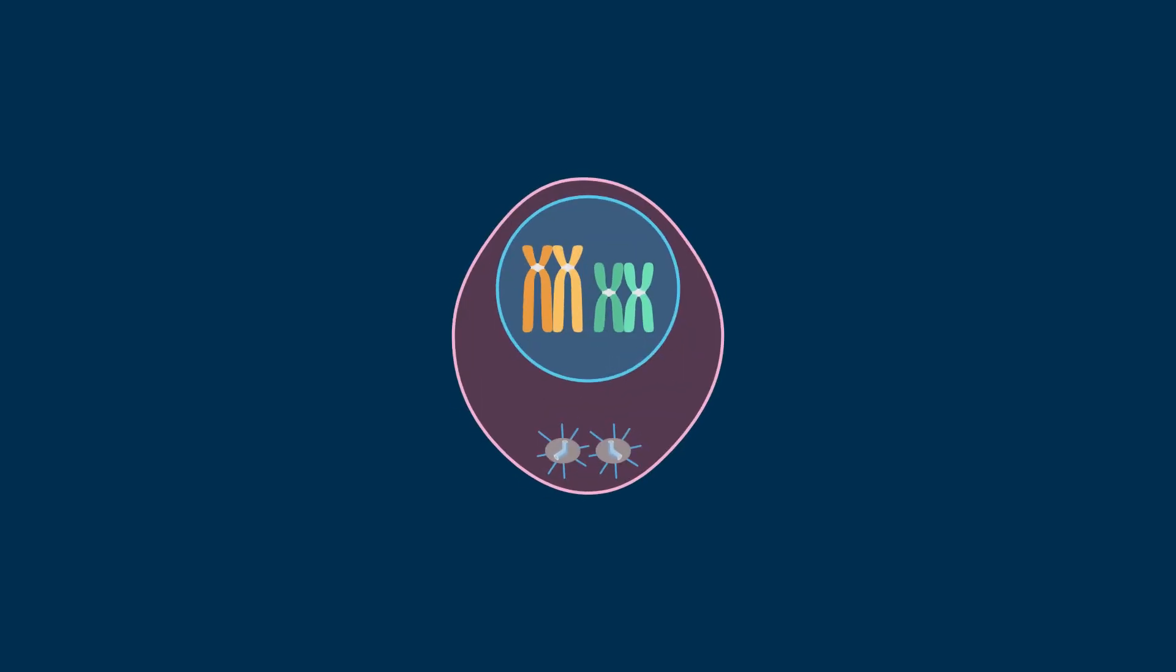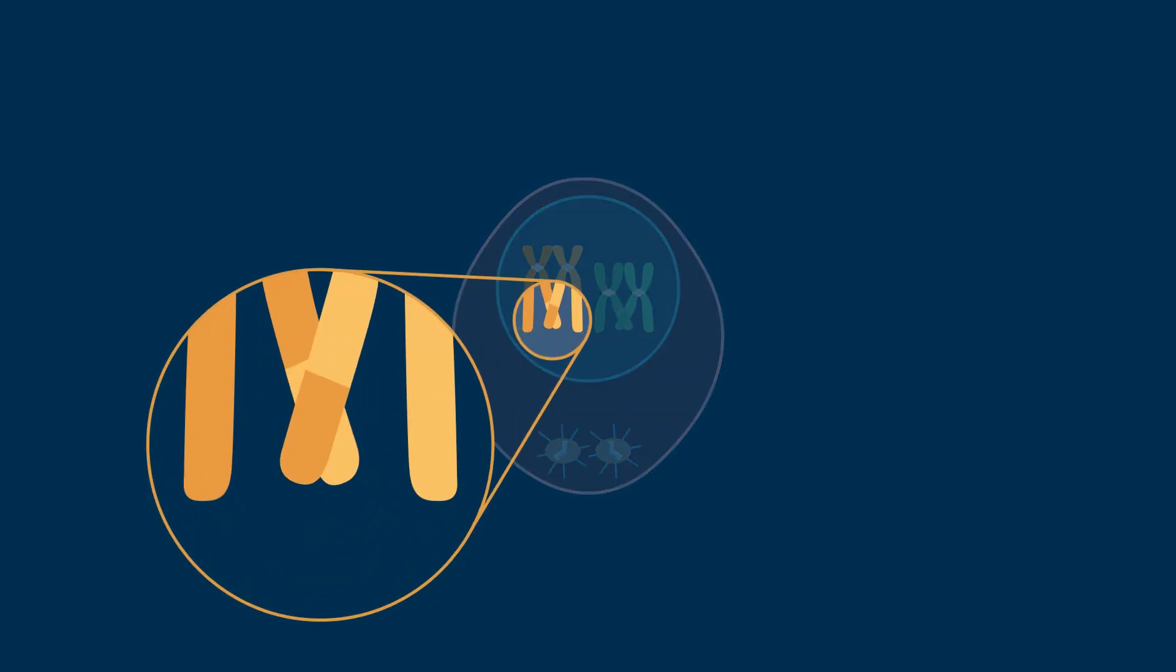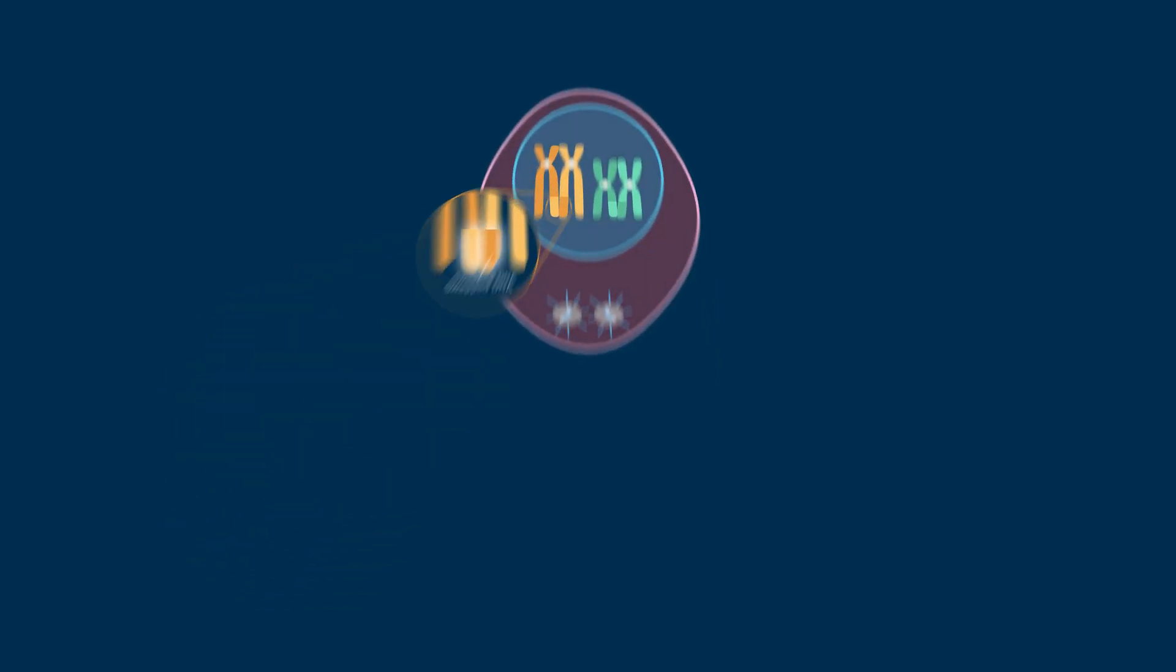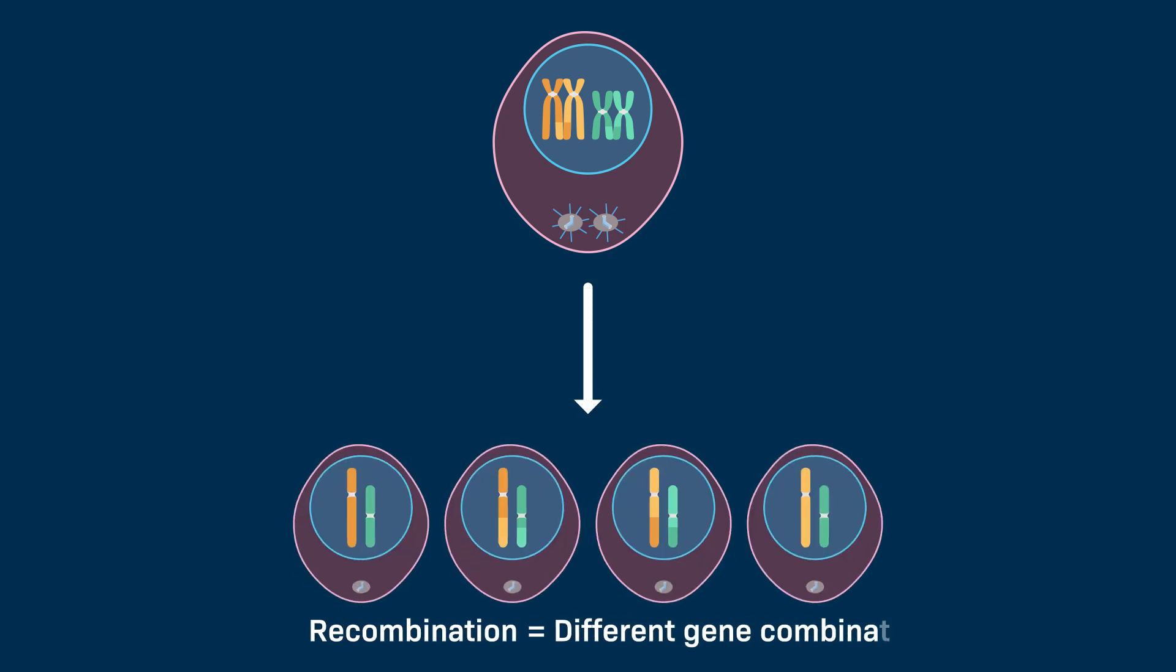That's because during meiosis, homologous chromosomes undergo a process called crossing over, during which they line up and swap big chunks of themselves around. This results in recombination, or a different combination of genes than those that existed in the original cells, which helps create genetic diversity among offspring during reproduction.